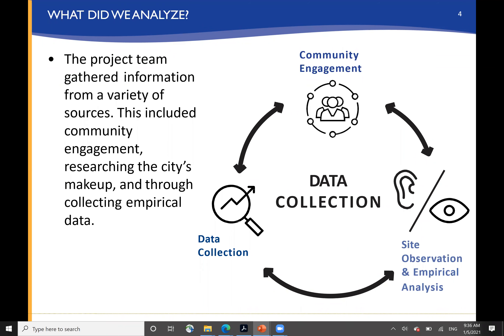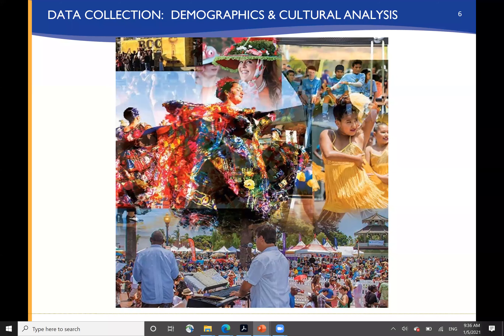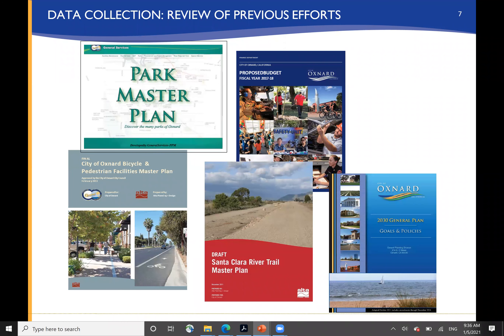What we did in this process was gather information from a variety of sources, research the city's makeup, collect empirical data, and conduct an extensive community engagement process. We mapped Oxnard's context and inventoried existing parks, and benchmarked against adjacent communities and other park systems around the state and country. We looked at the demographics and culture of Oxnard to understand the particular interests and needs of your people, and we reviewed previous planning efforts.